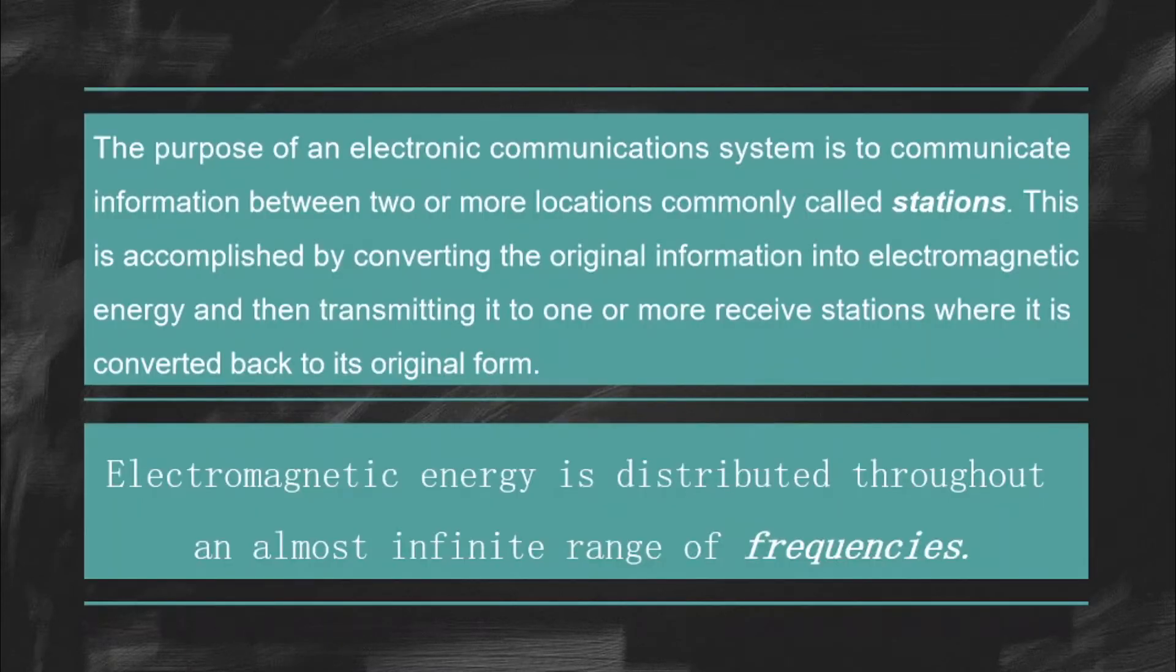The purpose of an electronic communication system is to communicate information between two or more locations, commonly called stations. This is accomplished by converting the original information into electromagnetic energy and then transmitting it to one or more received stations where it is converted back to its original form.